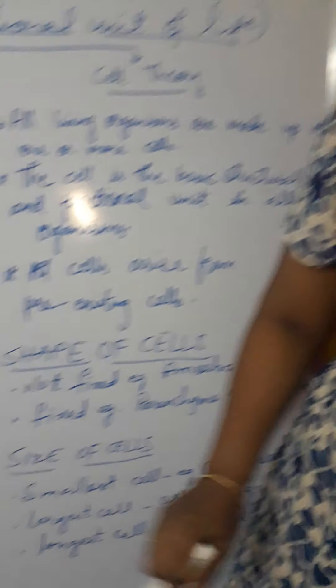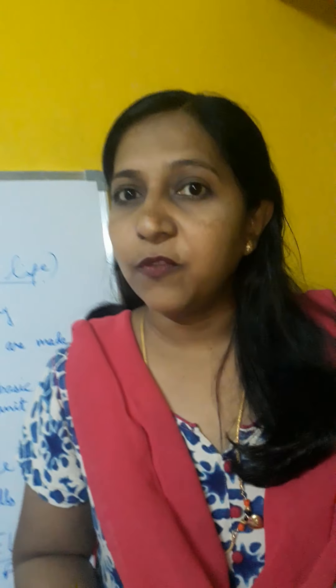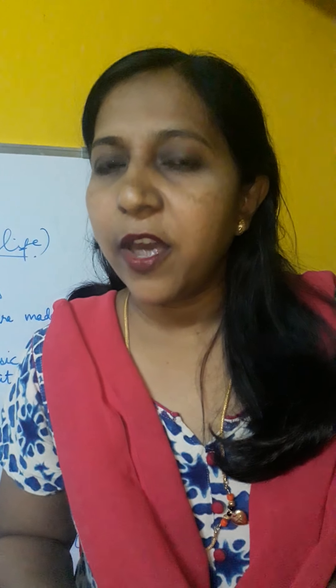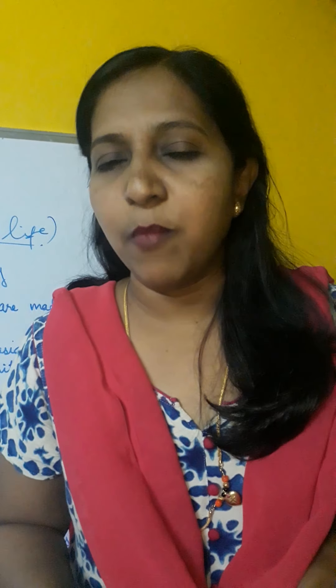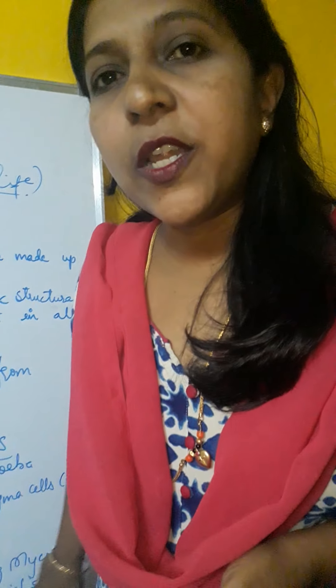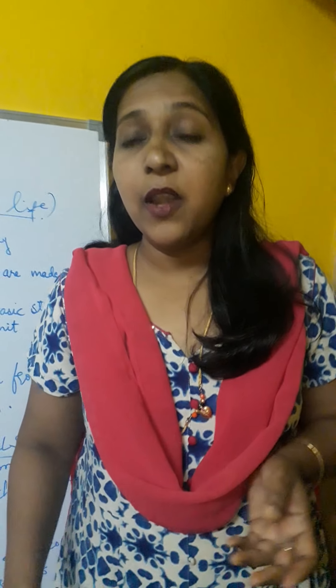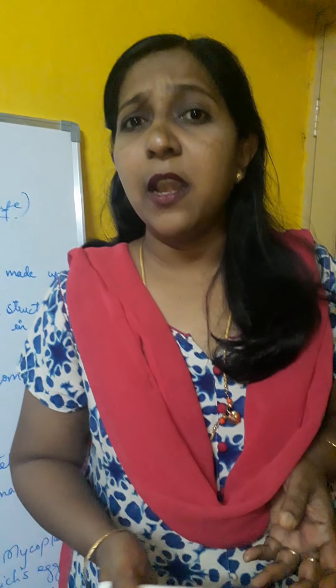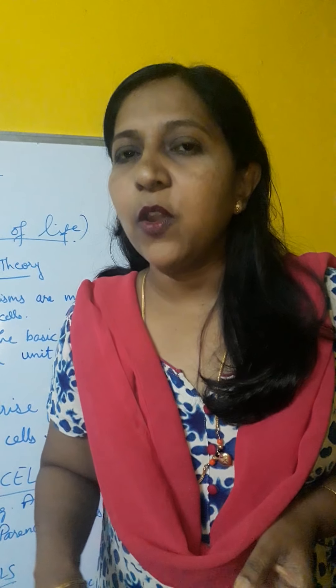When we talk about the size of the cell, it can be very small or very large. The smallest cell is mycoplasma. The largest cell is the ostrich egg, as you can see here. And the longest cell in the human body is the nerve cell, which can be up to 1 meter long.